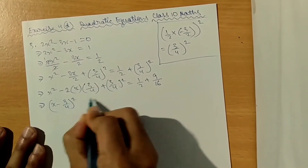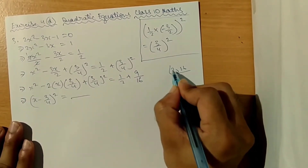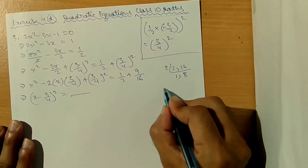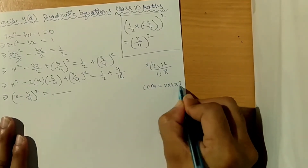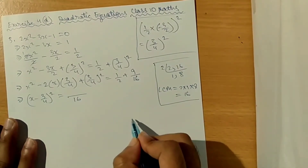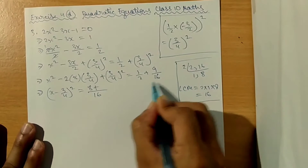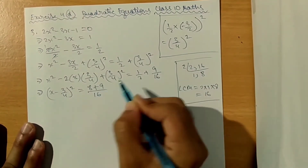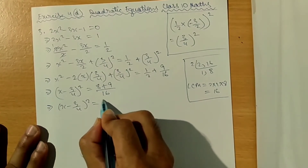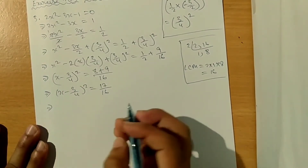This is equal to, using LCM. LCM of 2 and 16: LCM is 16. So 16 divided by 2 is 8, 8 into 1 is 8; 16 divided by 16 is 1, 1 into 9 is 9. This implies x minus 3 by 4 whole square is equal to 8 plus 9, which is 17, divided by 16.